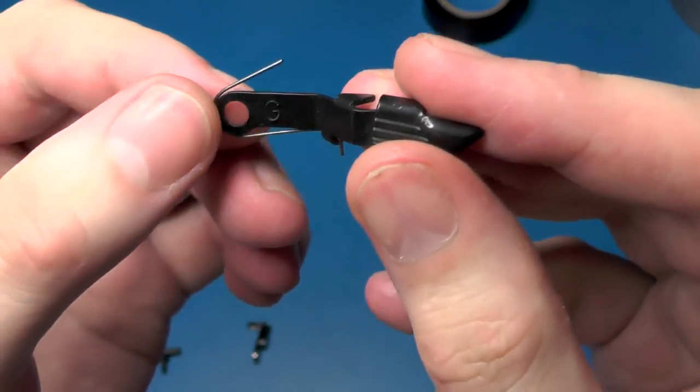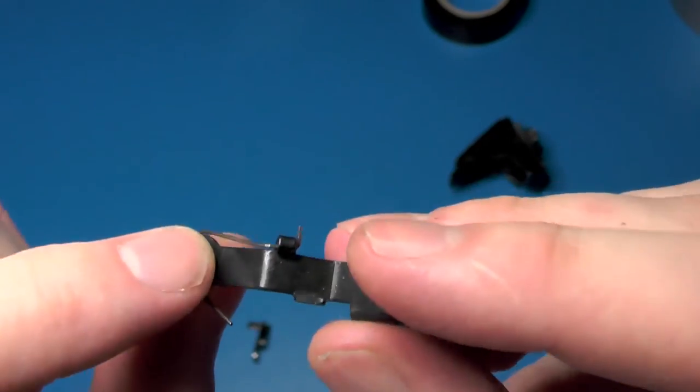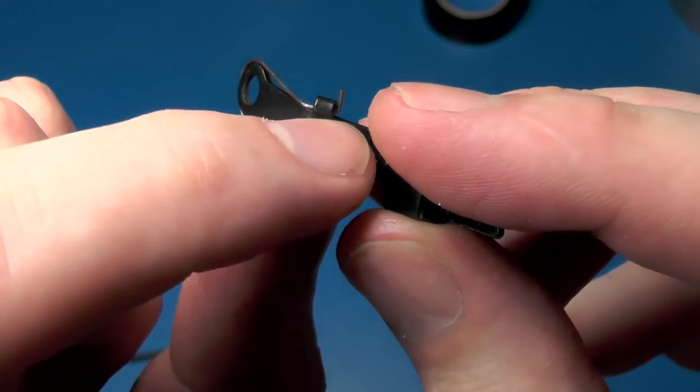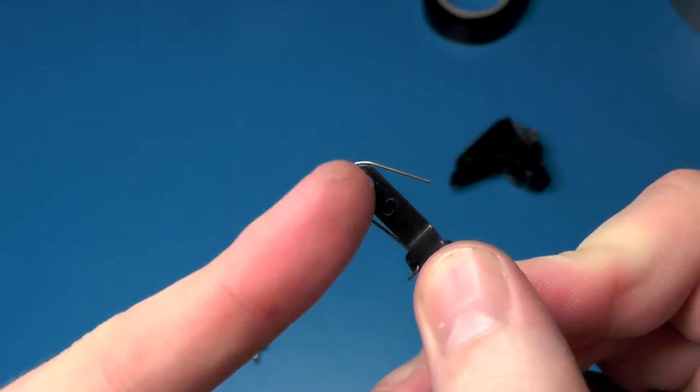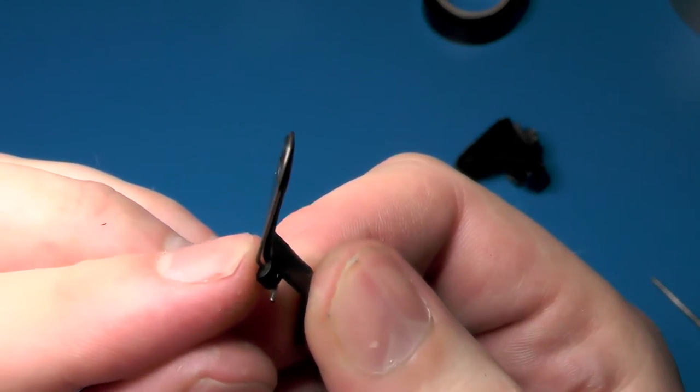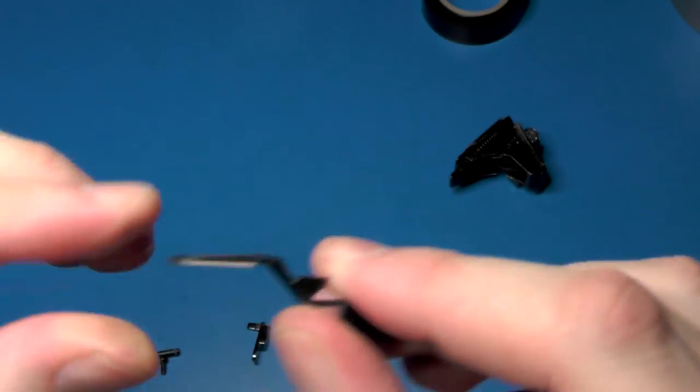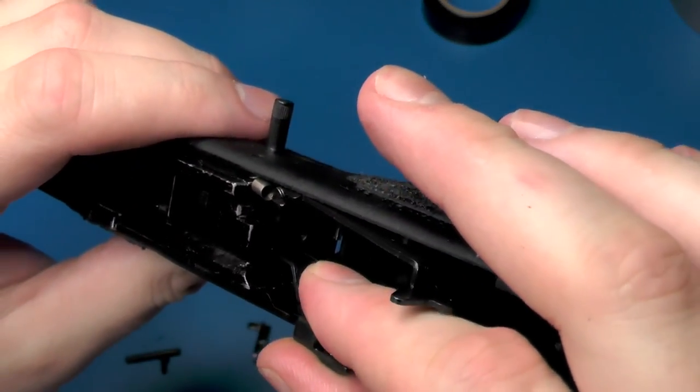So at this point we are going to take the slide catch, slide release, and the spring. This is an aftermarket Guardian piece, but the spring hooks in like this at the bottom and it needs to be looped around the edge of the slide catch so it doesn't get pinched when we install it.